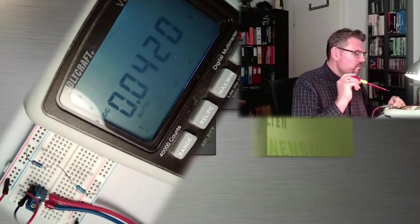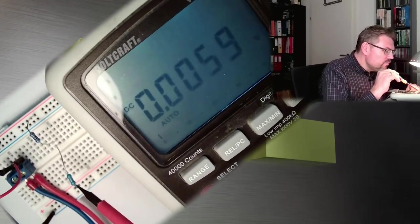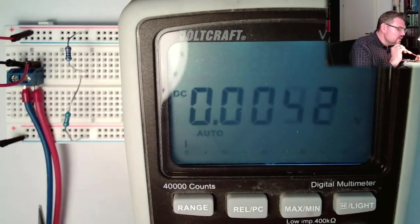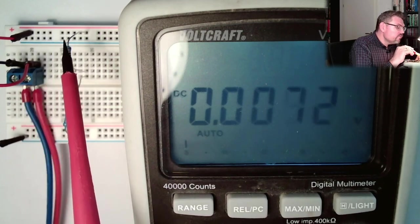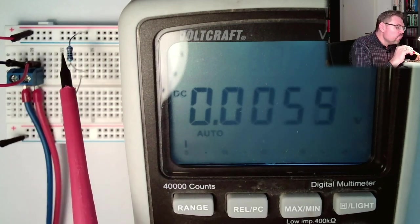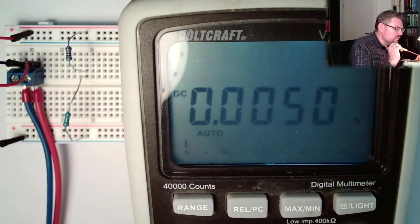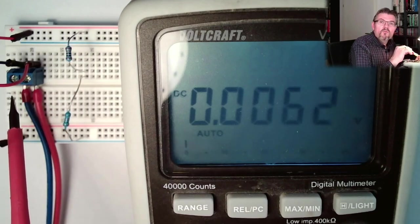So what we've got here? We've got two resistors. One resistor, this one, is 10,000 ohms and one resistor is 1,000 ohms.